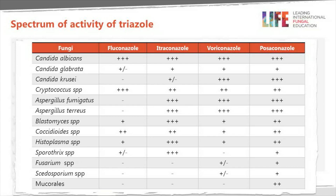This chart shows the comparative spectrum. There's not much to choose between the different azoles against Candida albicans. None are terribly active against Candida glabrata. Candida krusei is not inhibited by fluconazole, only a little by itraconazole, while voriconazole and posaconazole are better. For Cryptococcus, the drugs are similar, though itraconazole doesn't penetrate spinal fluid as well, which is why fluconazole is preferred for cryptococcal disease. Itraconazole, voriconazole, and posaconazole are active against Aspergillus. Very active against Blastomyces, good against Coccidioides, Histoplasma, and Sporothrix. Little activity against Fusarium, Scedosporium, and the Mucorales.